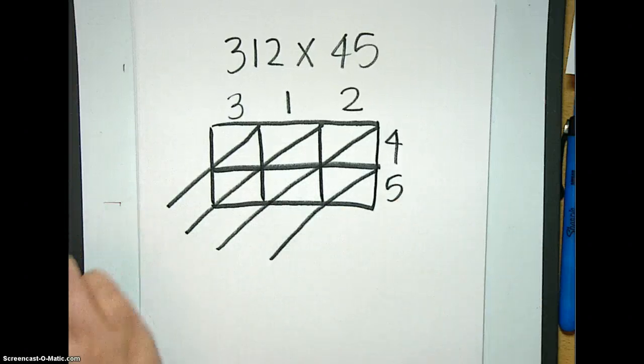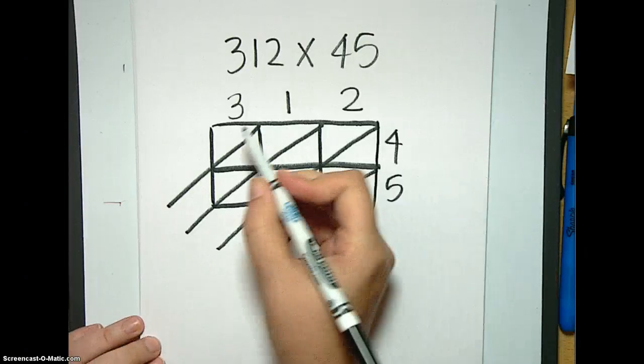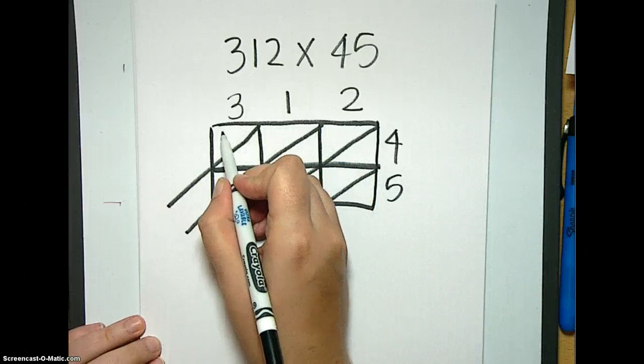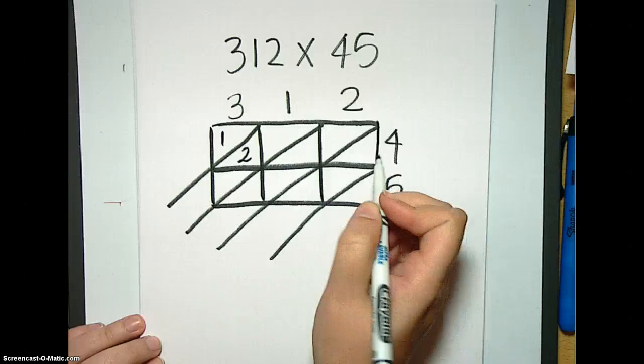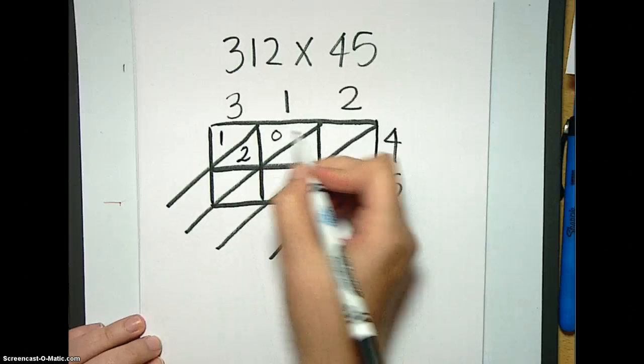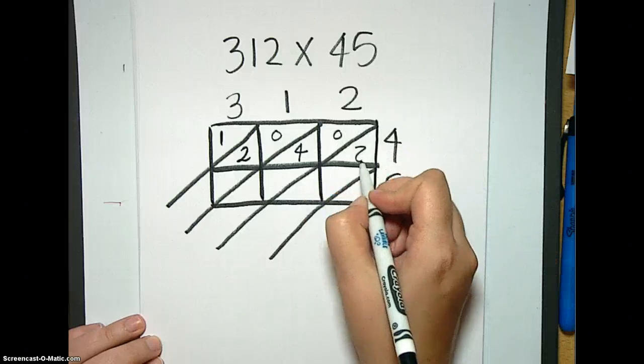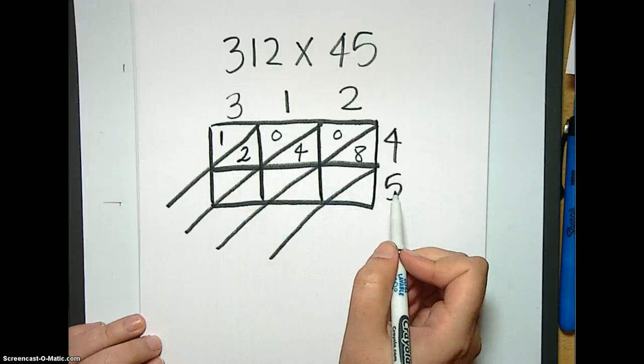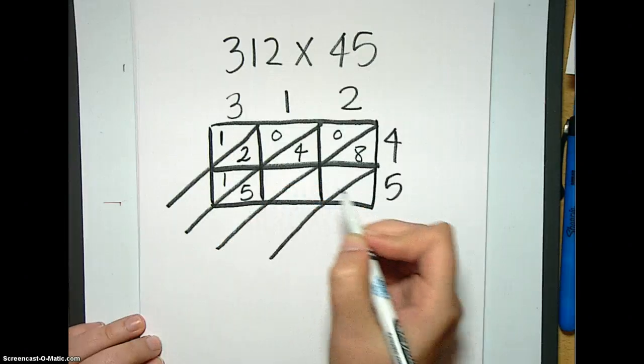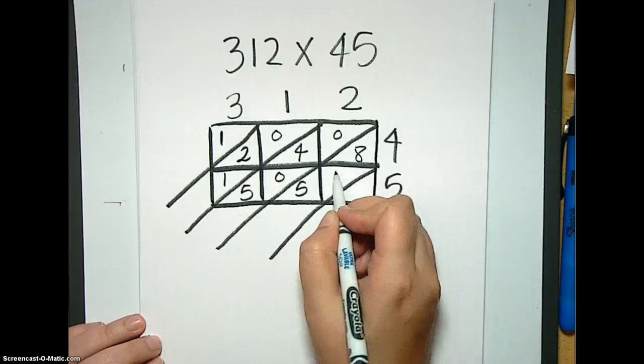So let's just go ahead and start with the multiplying. So we're going to have three times four, which is going to be 12. So our one goes here and our two goes here. One times four is four. Two times four is eight. So we move down. Three times five is 15. One times five is five. Two times five is ten.